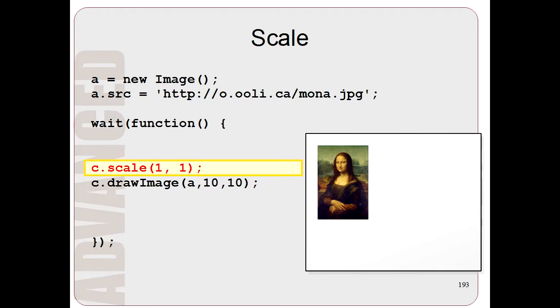So here we have an image. And we have this transformation scale that I showed you before. And it has two numbers inside of it. So usually if you just have the numbers 1 comma 1, the image doesn't change at all.